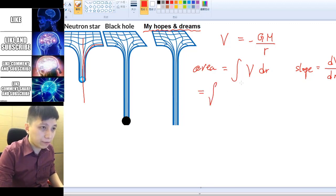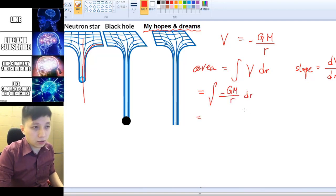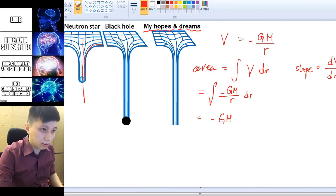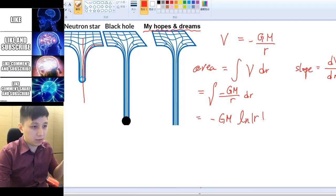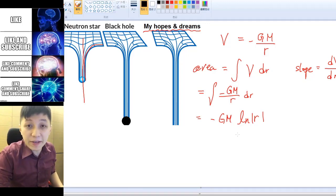So we can change the expression of V with the equation that we have negative GM over R dR and so if you have learned calculus before you know you can take out the constant negative GM and this will become integrating 1 over R with respect to R and that is going to give you natural log R. It doesn't really mean anything.